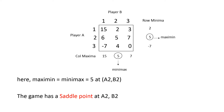The maximin value equals the minimax value — both are 5. That is at point A2, B2: Player A's second strategy and Player B's second strategy. At the intersection A2B2, the value is 5. Hence, the game has a saddle point at A2B2. If the maximin value and minimax value are the same, the game has a saddle point.